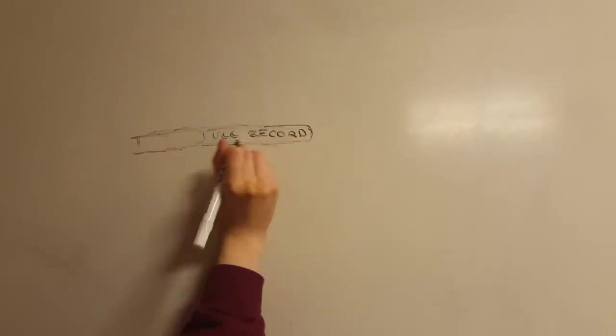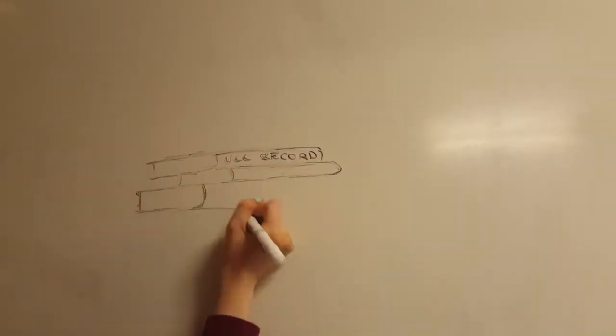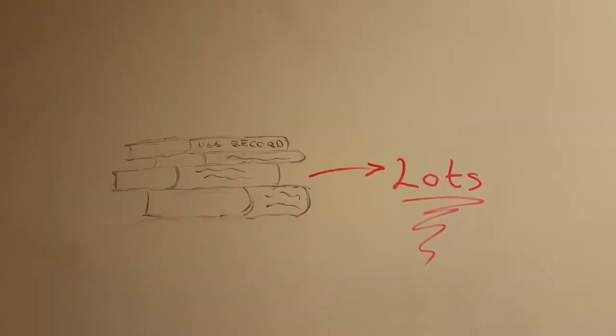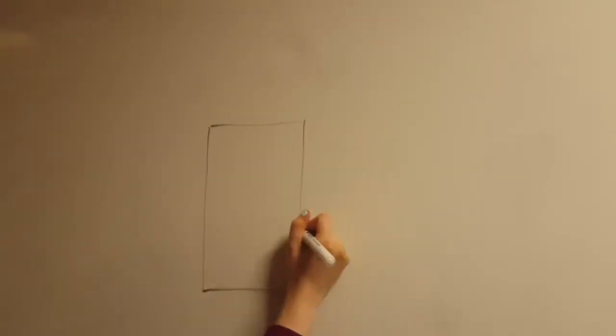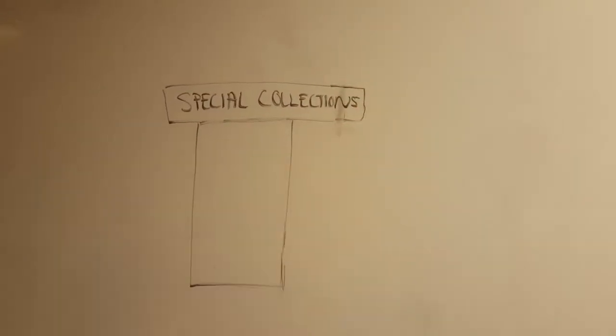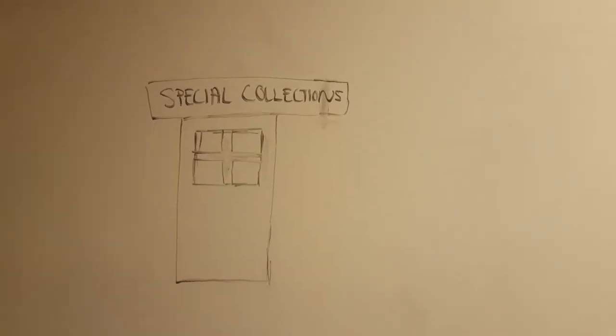The UCC record is a collection of journals that document everything that happened in the college between 1940 and 1980. When researching for this project, our group went down to the Special Collections archives in the library to read through the UCC record. Special Collections is a great resource in the basement of the library in UCC, where the UCC record is kept along with many other important documents.